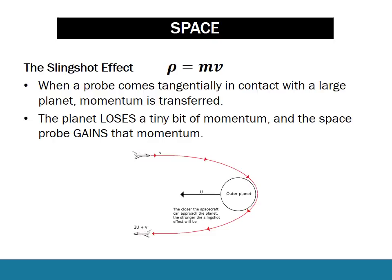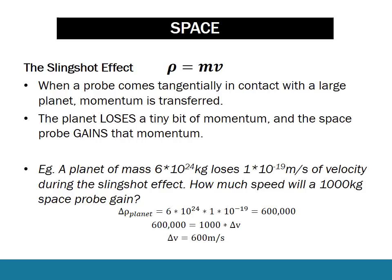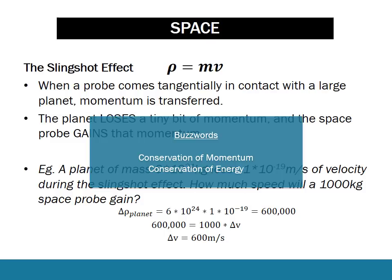In terms of the slingshot effect, it's important to know that you can use a planet's momentum to change the direction of a rocket without using fuel. The rocket draws on the gravitational field of the planet it's slingshotting around, and by conservation of momentum, the planet loses a tiny bit of its momentum, but the rocket gains a huge amount because the planet is so big. Key buzzwords for questions are conservation of momentum, conservation of energy, and writing down the formulas.